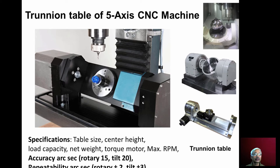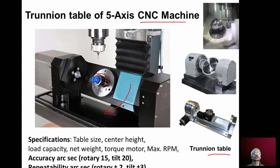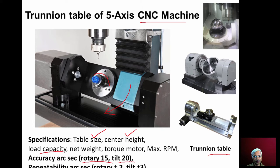A regular XYZ CNC machine mounted with a trunnion table provides two additional axes — the workpiece can be rotated by a rotary axis and the table can be tilted — making 5 axes total. Different sized CNC machines are available with different table sizes, center heights, and load capacities. The rotary axis accuracy is 15 arc seconds, tilting accuracy is 20 arc seconds, and repeatability of ±2 to 3 arc seconds is possible.